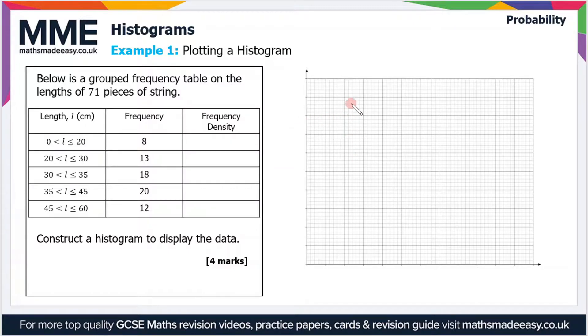The main one is that we're plotting frequency density rather than just the frequency. It's the actual area of the bars themselves that tell us what the frequency is, and we have to make sure that there are no gaps between the bars.